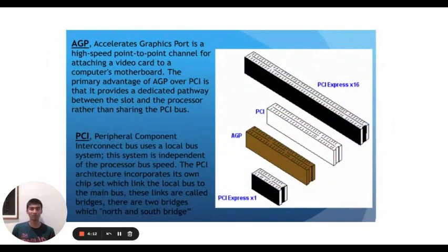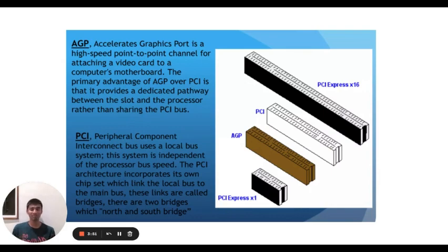The second type is AGP, also known as Accelerated Graphics Port. It is a high-speed point-to-point channel for attaching a video card to a computer's motherboard. The primary advantage of AGP over PCI is that it provides a dedicated pathway between the slot and the processor rather than sharing data through the parallel bus system. The last one is PCI, also known as Peripheral Component Interconnect bus, which uses a local bus system independent of processor bus speed. The PCI architecture incorporates its own chipset, which links the local bus to the main bus through connections called bridges.